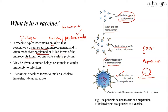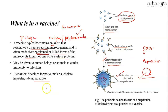These include vaccines for polio, malaria, cholera, hepatitis, rabies, smallpox, and more. Usually, the protection conferred by a vaccine is measured in clinical trials that relate immune response to the vaccine antigen to clinical endpoints such as prevention of infection, reduction in disease severity, or a decreased rate of hospitalization.